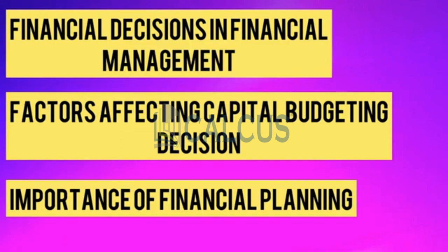In terms of fixed assets, examples include buildings, machinery, and plant. Whatever kind of assets we invest in — whether fixed assets like plant and machinery, or current assets — we make a capital budgeting decision accordingly.